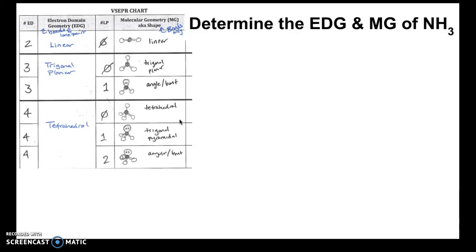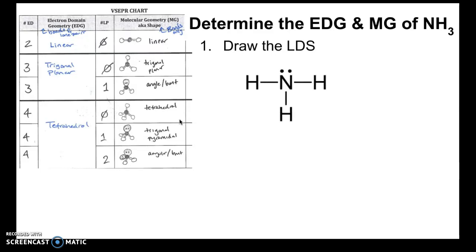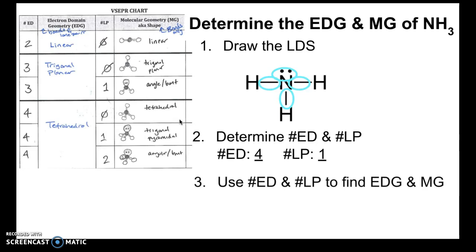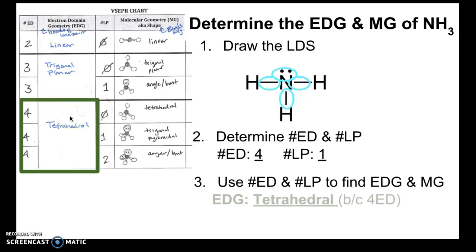Let's look at the next example: NH3. The steps are the same — first, draw the Lewis dot structure, which is shown here. Next, determine the number of electron domains and lone pairs by going around the central atom. This structure has four electron domains and one lone pair. For electron domain geometry, anything with four electron domains is tetrahedral — it doesn't matter how many lone pairs, as long as there are four electron domains.